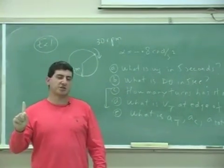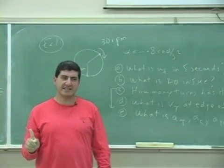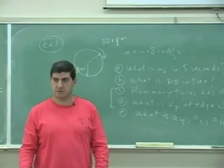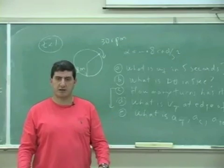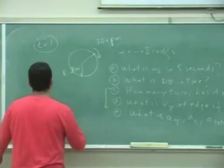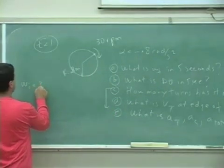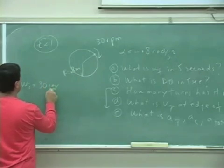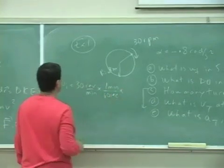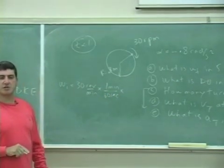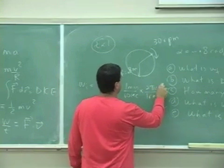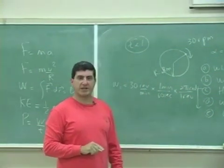Now, notice the initial speed of rotation is not given in the typical radians per second. It's given in revs per minute. RPM means revs per minute. So first, we have to change that to radians per second. So omega initial, 30 revs per minute, one minute is 60 seconds, and one rev is how many radians? One rev is 2 pi radians. This will change it to radians per second.